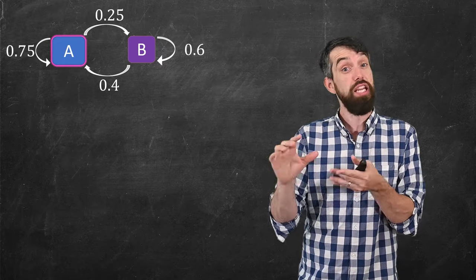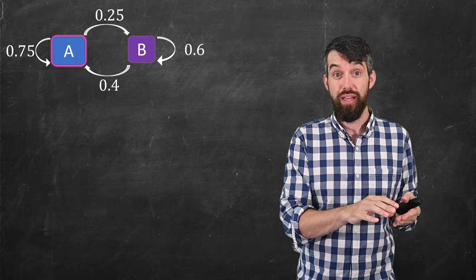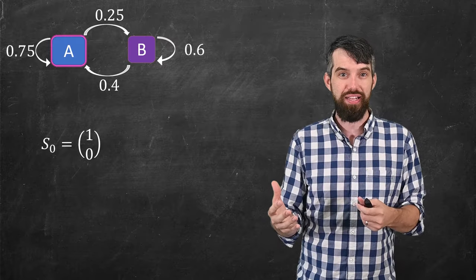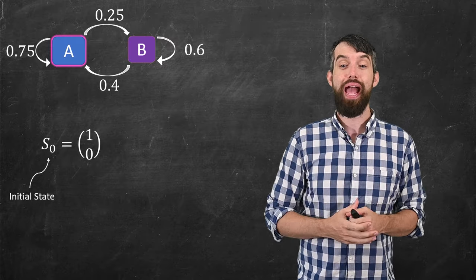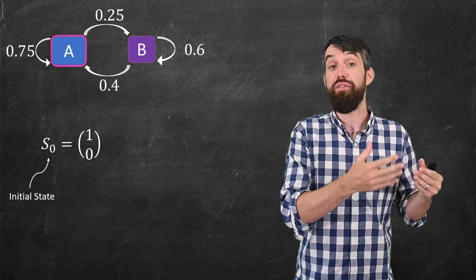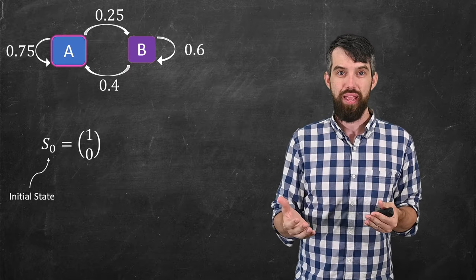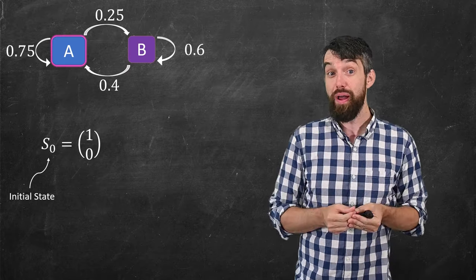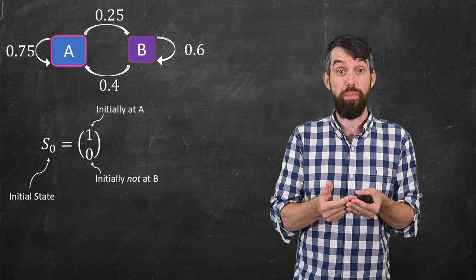So what I'm going to do first is introduce some notation to help me describe different things. The first is going to be what I will call S naught. And this is referred to as the initial state of the system. And it's a vector. It's got a 1 and a 0. So what does that mean? Basically, the top component of my vector refers to state A and the bottom component to state B.